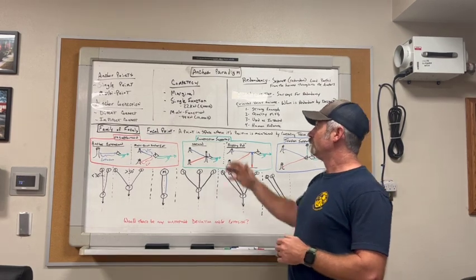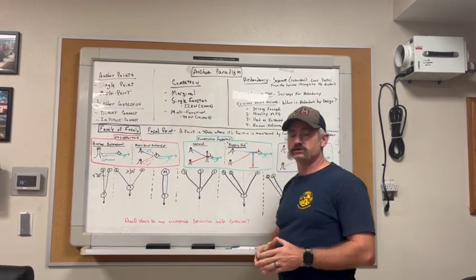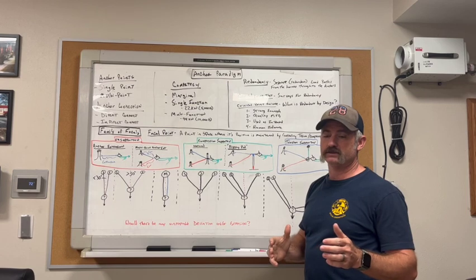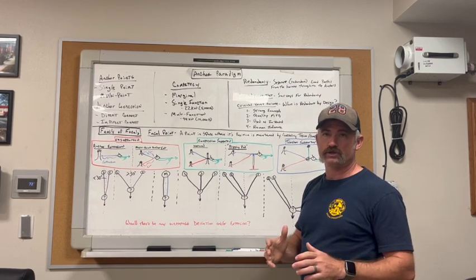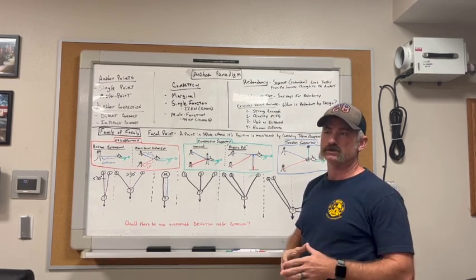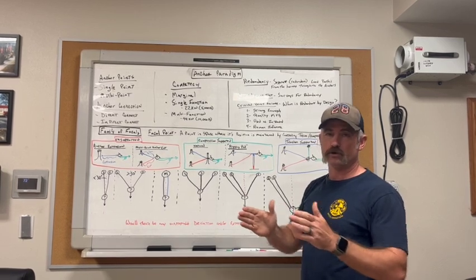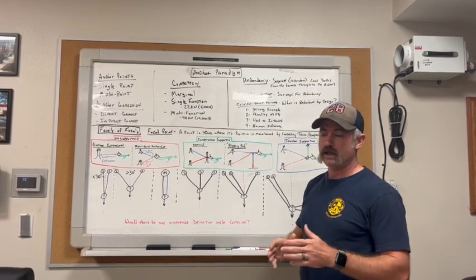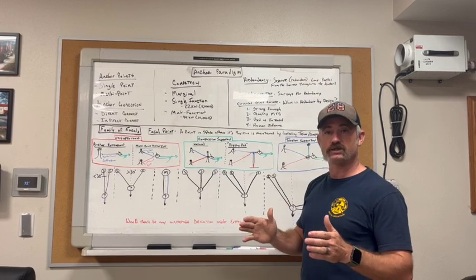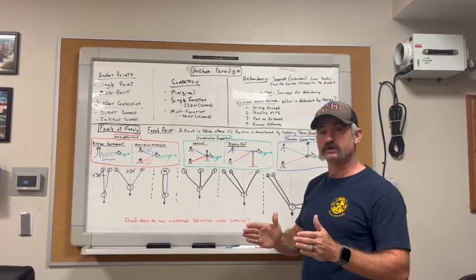Next, you've got single function anchors. A single function anchor is defined as an anchor point with which you can put one thing on. We prefer to run redundant systems, so you've got a separate load path between the anchor and load, and so you would need two single function anchors in order for those two ropes to get connected to.